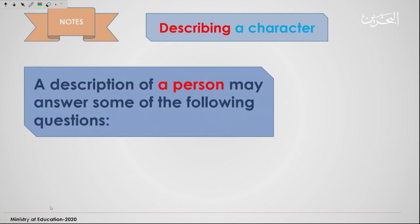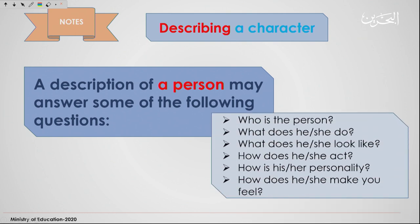A description of a person may answer some of the following questions — we always give you a set of questions that helps guide you to form a paragraph. When we talk about a person or character, consider: Who is the person? What does he or she do? What does he or she look like? How does he or she act? How is his or her personality? How does he or she make you feel? That's why when describing someone, you always choose someone you like, because you're more comfortable sharing that information.